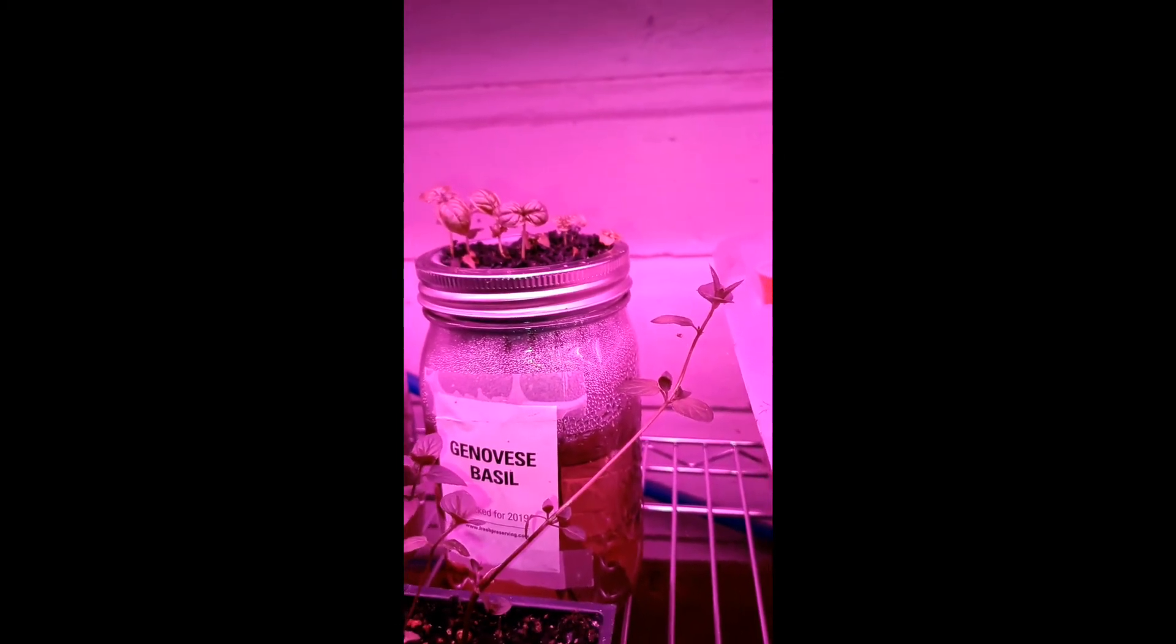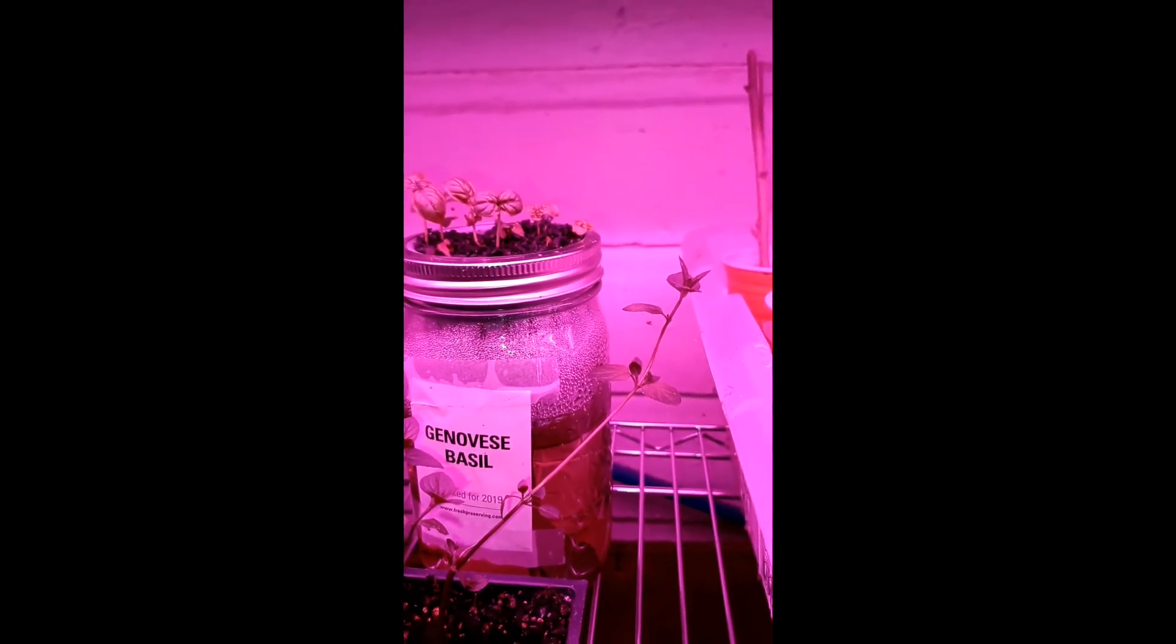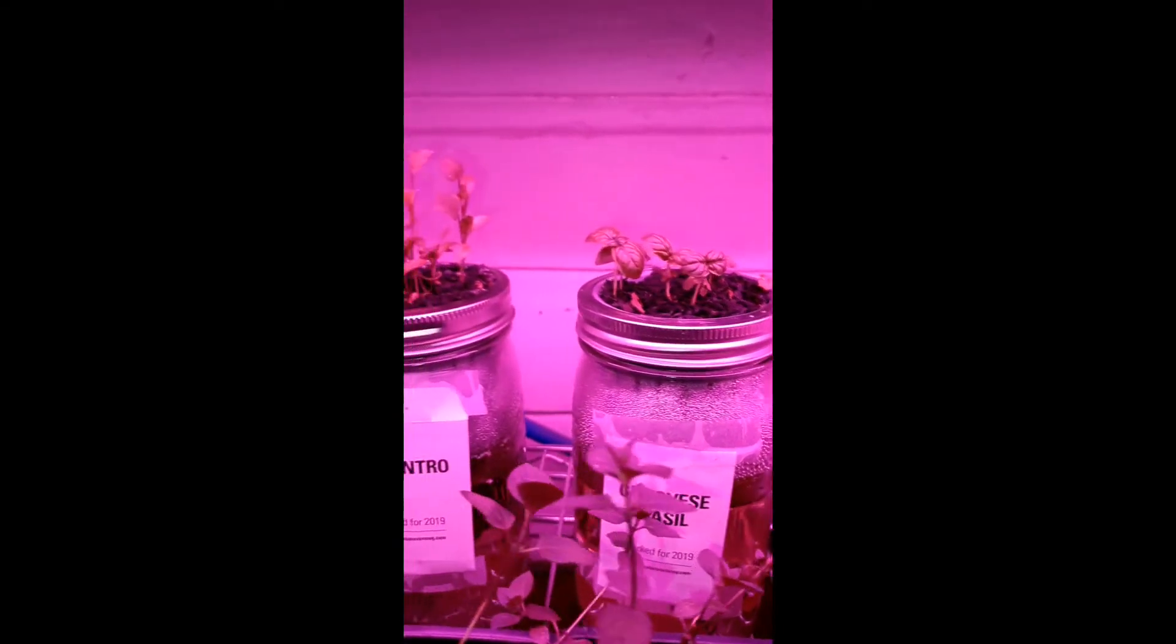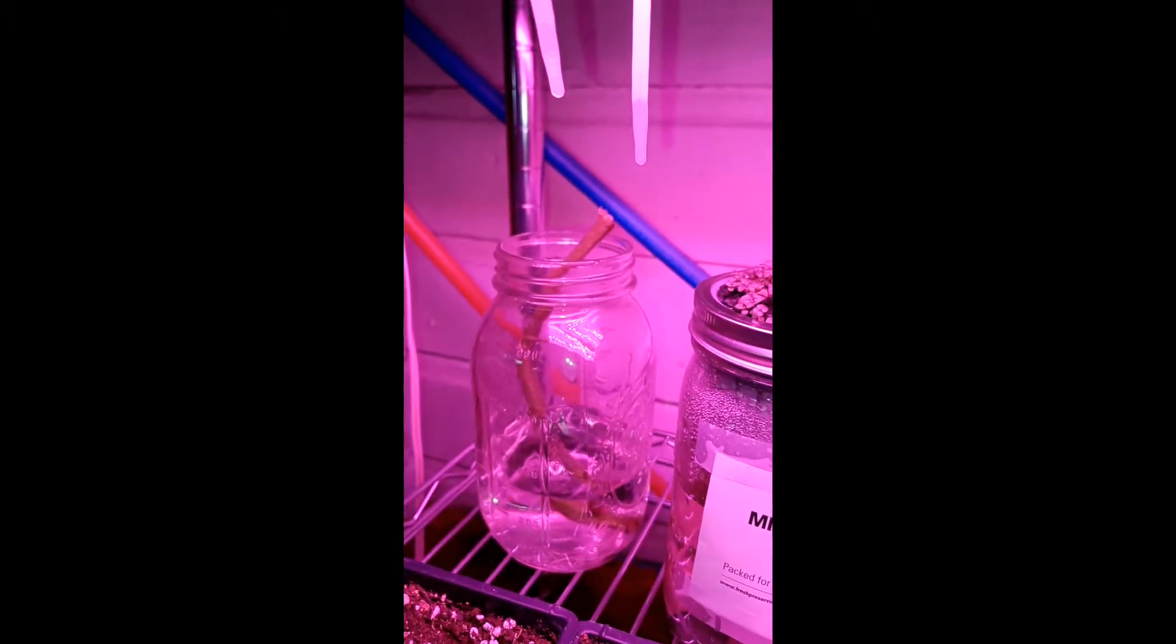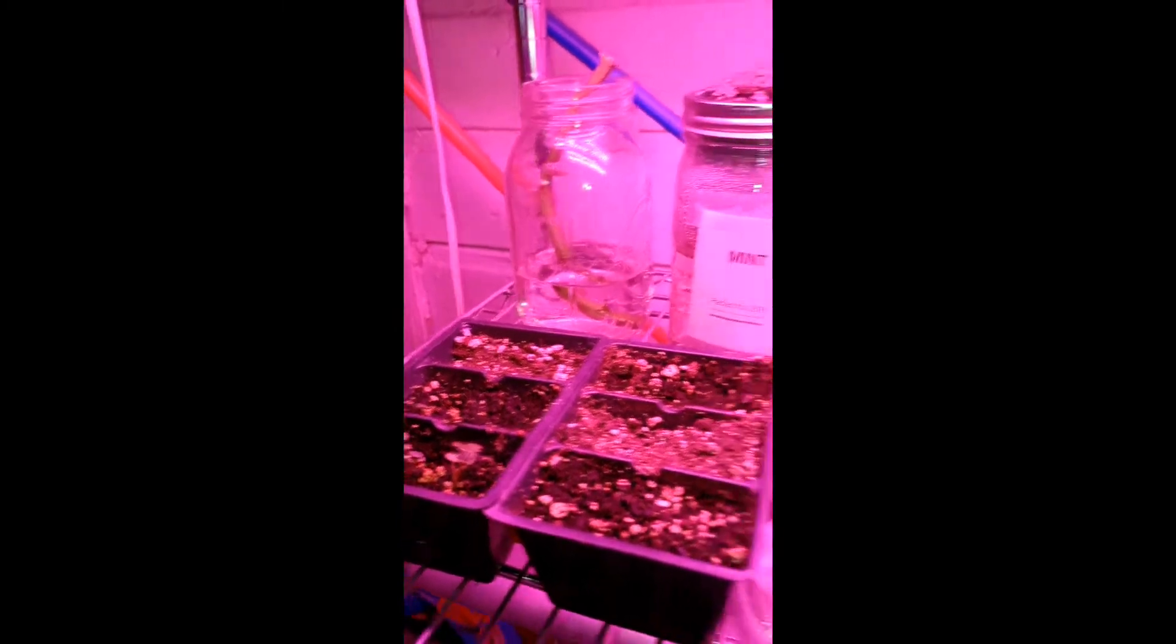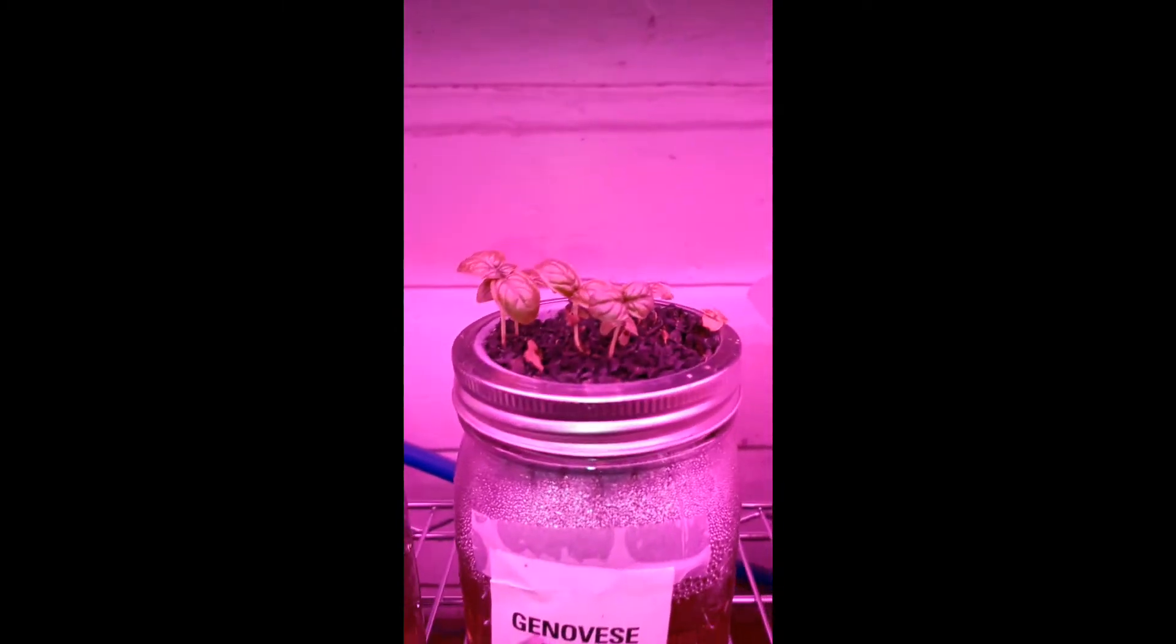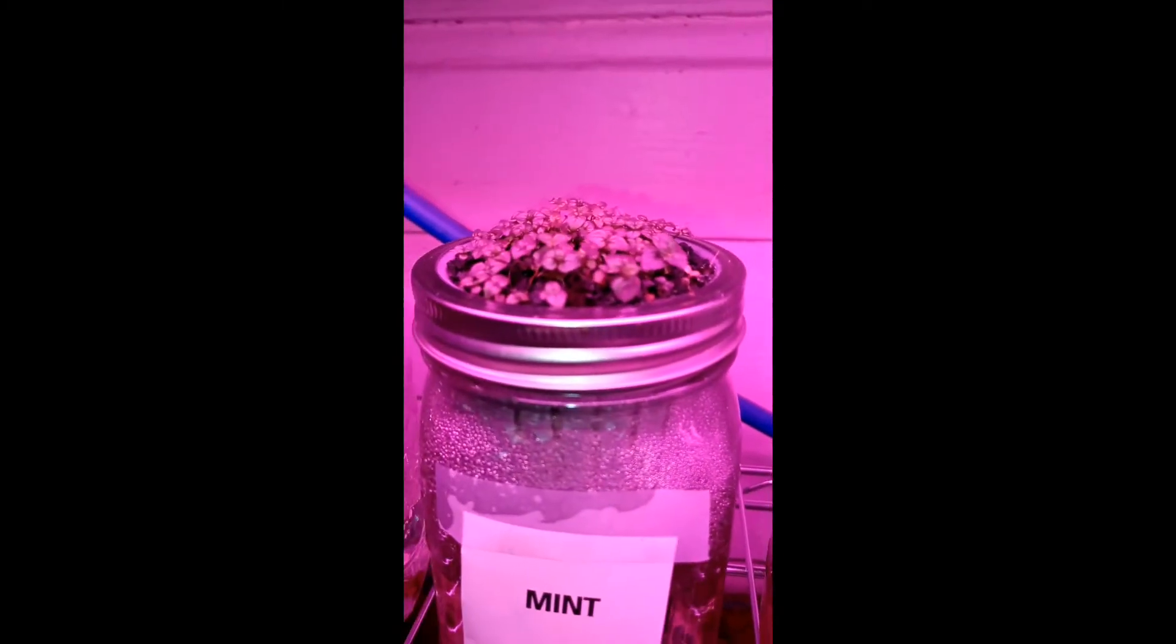You can always get non-chlorinated water from the grocery store in a gallon jug, and just use it particularly for your plants at home if that's what you want to do. But there's a lot of times when I just put water directly out of my sink. This is just another way. This is basil, cilantro, and mint.